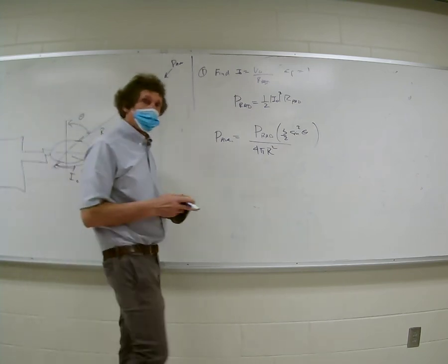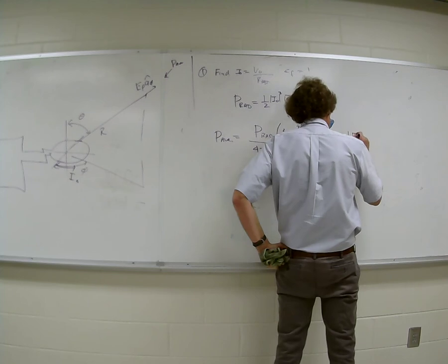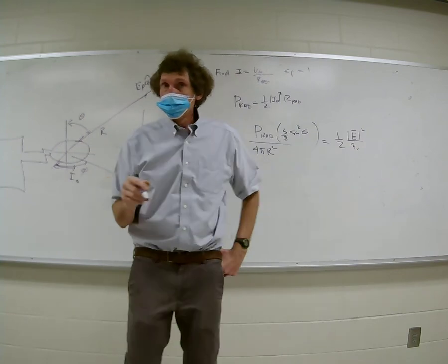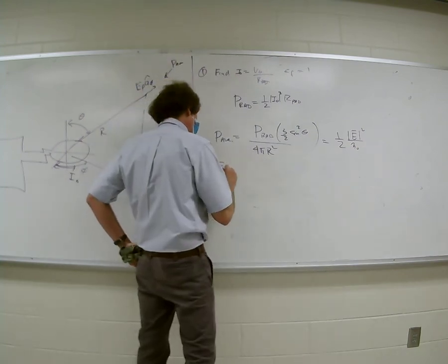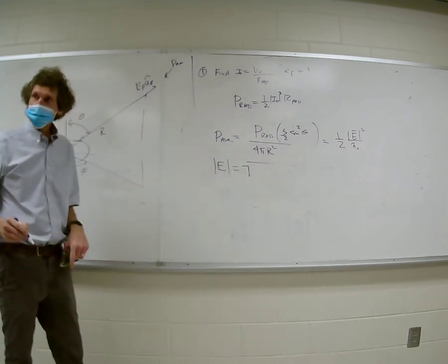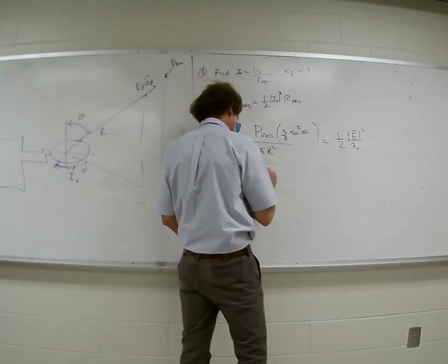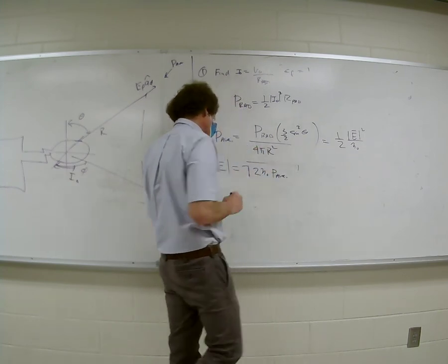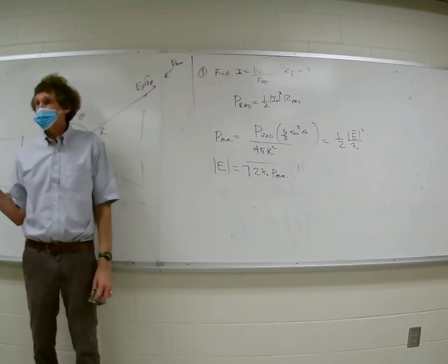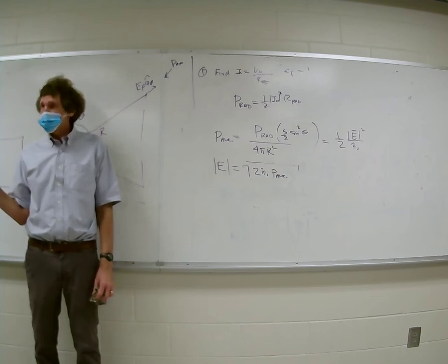To get the E field: I know average power density equals one-half times |E|² over η₀. So the E field magnitude is the square root of 2η₀ times the average power density. And if I want the H field, I just take |E| divided by η₀ and put it in the A_phi direction. Those are the magnitudes you really worry about. That's the whole nine yards for the short dipole and loop.